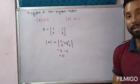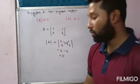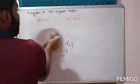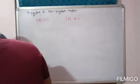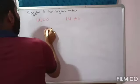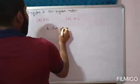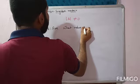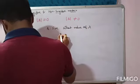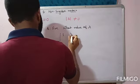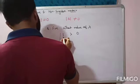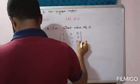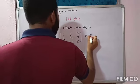Let us take one more example. For what value of lambda is the matrix [1, λ, 0; 3, -1, 2; 4, 1, 5] singular? This is a square matrix of order 3.